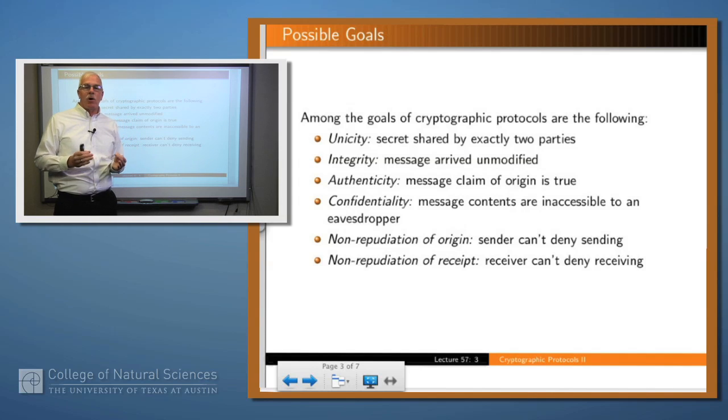Okay, so what kind of goals might we want to accomplish with a cryptographic protocol? Well, there's a number of them listed here. They have fancy names like Unicity, but they're really simple things. So the idea for Unicity is that two parties want to establish a shared secret. We saw an example of this earlier in Diffie-Hellman, and that actually was a cryptographic protocol.